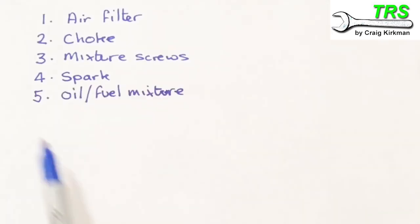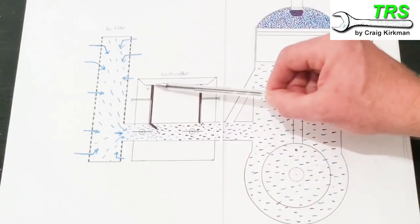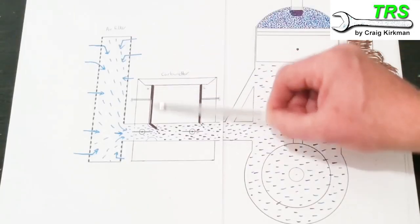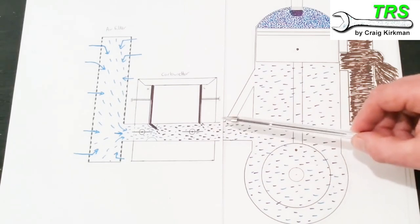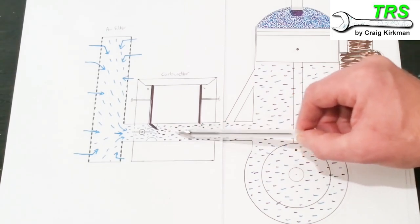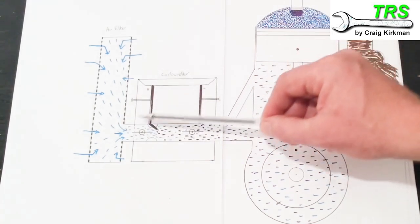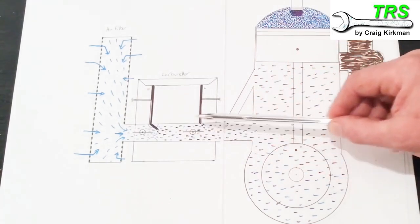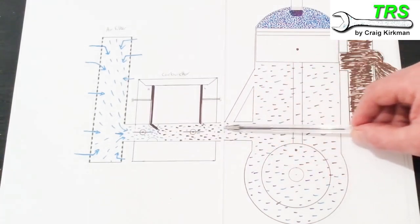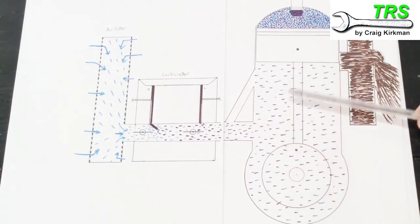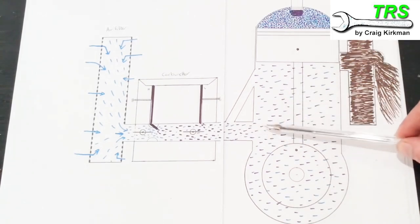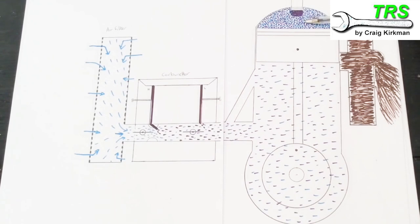Now, number five, oil fuel mixture. If you can see, I've just illustrated the fuel now as dark. And what I'm trying to say by that is that there's too much oil in with the fuel. So now what we've got is a good amount of airflow and we've got the air coming in nicely. Everything's open. We're dragging in fuel. Everything's working. But the problem is now that because there's so much oil, it's making it difficult for the engine to combust the fuel that it's mixed with.